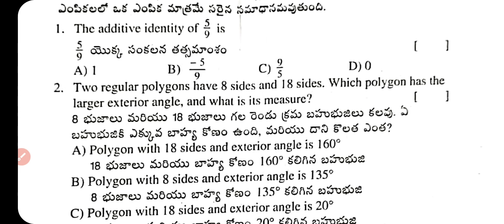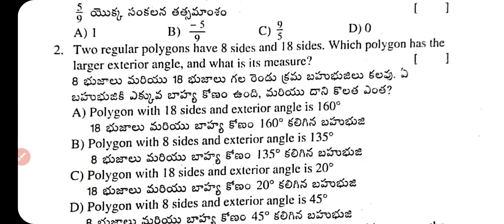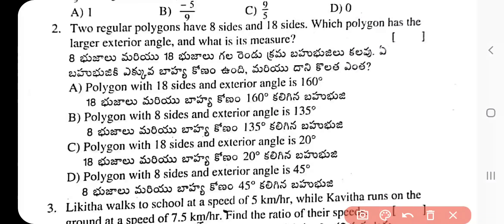Question 2: Two regular polygons have 8 sides and 18 sides. Which polygon has the larger exterior angle and what is its measure? The correct answer is option D — the polygon with 8 sides has the larger exterior angle, which is 45 degrees.